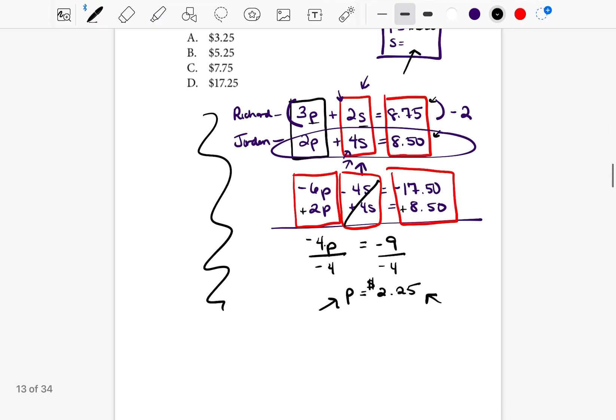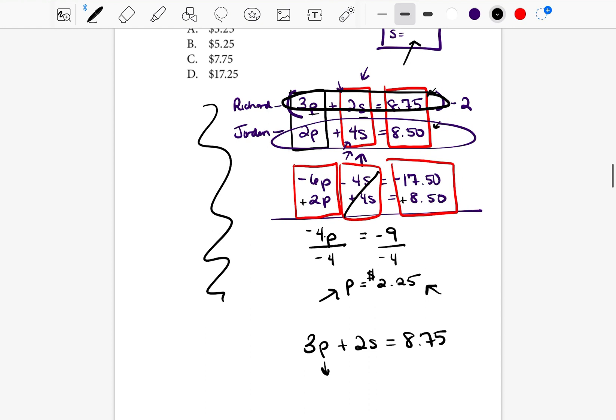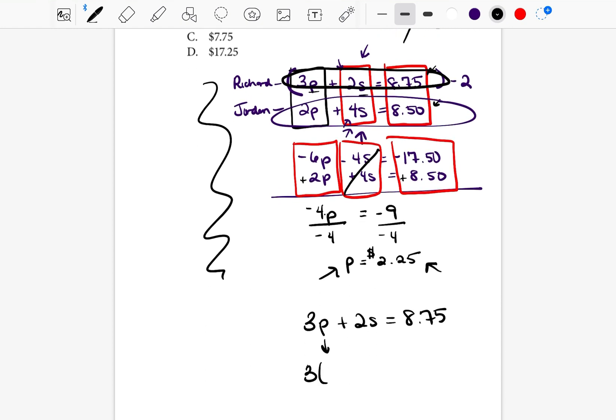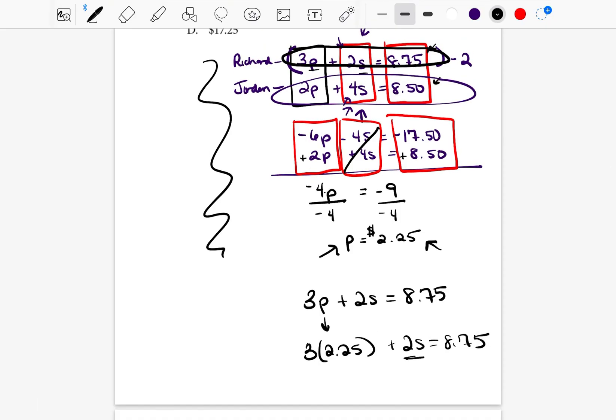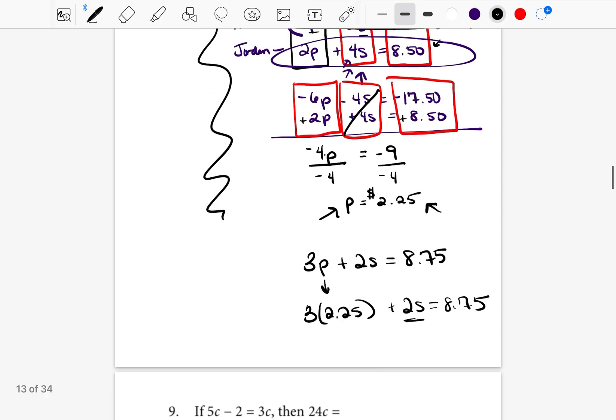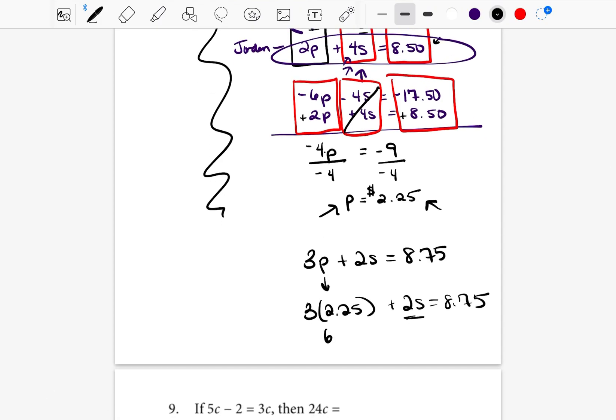How do we figure out what S is equal to? You take the original equation, 3P plus 2S equals 875. And now instead of writing the P, we can write what P is equal to. So P is equal to 225. We're just going to insert that into the equation. And if you look at that, you now only have one variable to solve for. So let's go ahead and solve for this. So 3 times 225, you can go ahead and put that into your calculator if you need, but that is equal to 675 plus 2S equals 875.